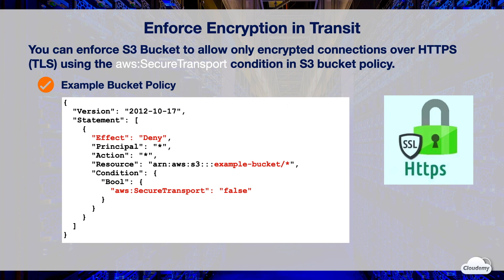We want to include all resources including all objects and subresources in the bucket, using the bucket ARN slash asterisk. Finally, we've set the AWS Secure Transport condition to false, which means we're going to deny any requests not using secure transport.